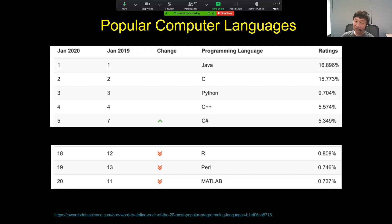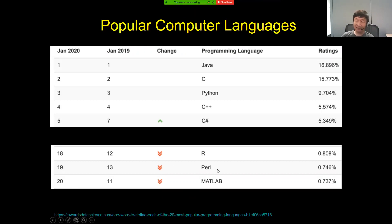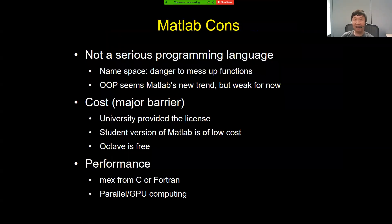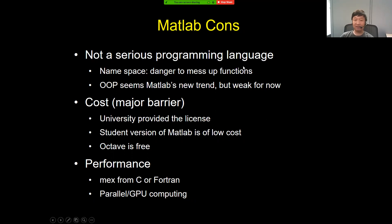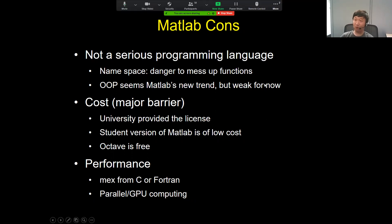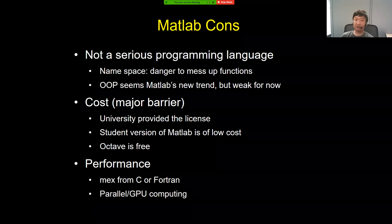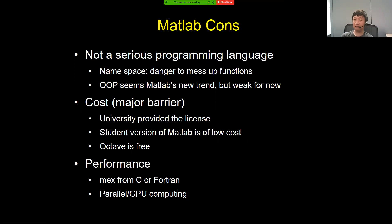Why are we choosing it if it's not that popular? You can see Python and Java are in the top three, but there's a reason to choose MATLAB. Let me briefly say something bad about MATLAB first. Why is it rated number 20, not number one or two? Serious programmers don't consider MATLAB a real programming language — they think it's a piece of junk. From that point of view, maybe that's right.